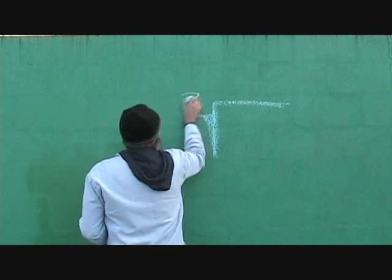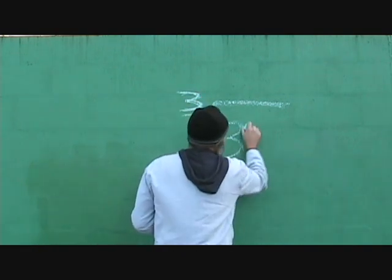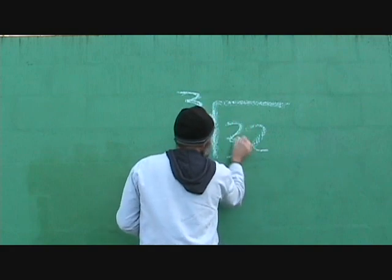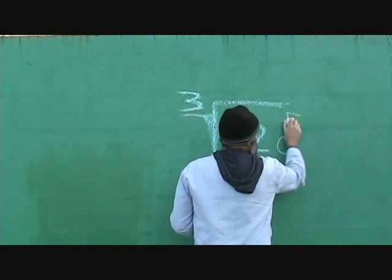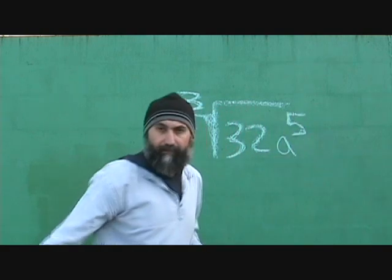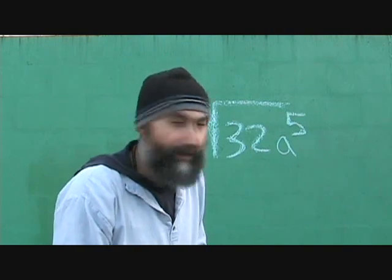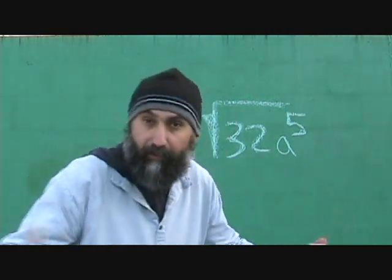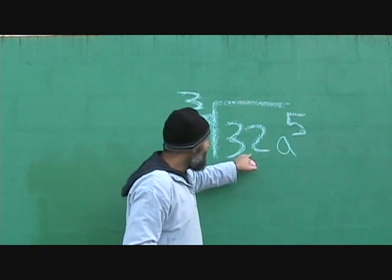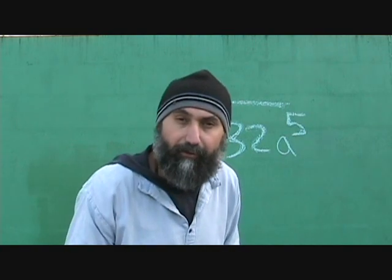Let's do an example. Let's take the cube root of 32a to the power of five. Let's break this down into its core values. 32 is going to be — because it's even — you can divide it by two.